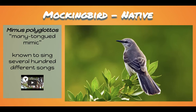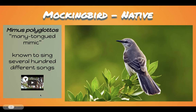The Mockingbird is a famous native bird and it is the state bird of Texas. Its Latin name, Mimus polyglottos, means "many-tongued mimic" — because they're known to sing several hundred different songs. Something interesting they have in common with humans is that as they age, it's harder for them to learn new songs, just like as we age our hearing changes and we're not as easily able to acquire new languages. I'm going to play a brief clip of a Mockingbird singing.